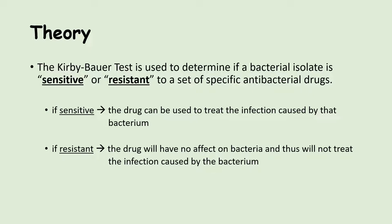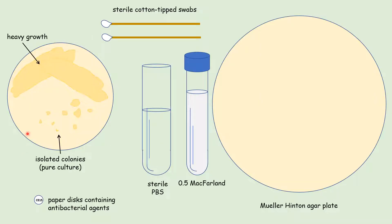Let's now look at the reagents required to perform a Kirby-Bauer test. First, we need a plate that contains the patient's bacterial isolate. This plate was streaked for isolation, so it has an area of heavy bacterial growth where we diluted the bacteria to get individual, isolated colonies. These colonies should look identical since we want to start with a pure culture. Next, we're going to need some sterile cotton tip swabs.